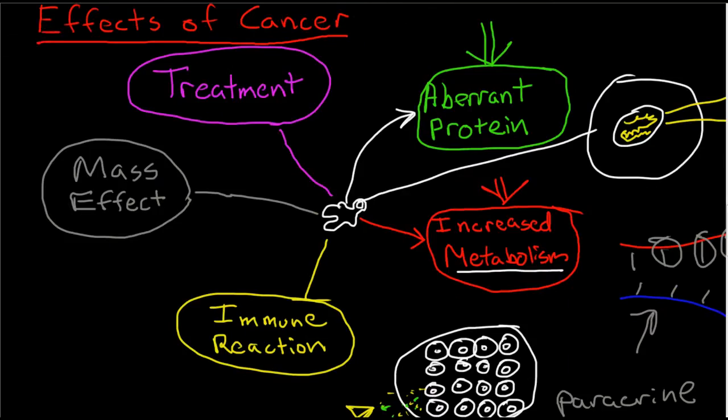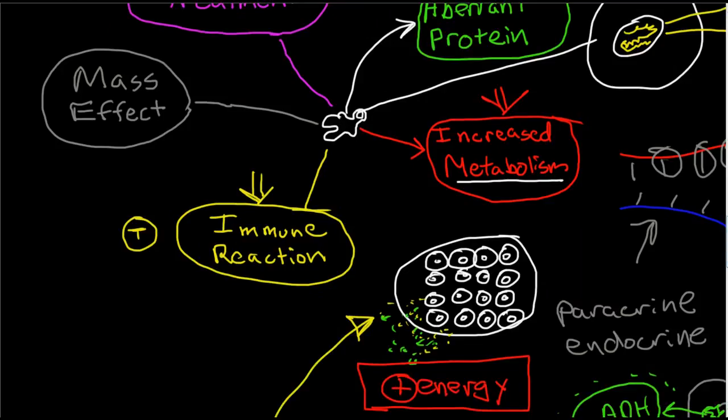Now, the third area I want to talk about is the body's immune reaction. Now, the body detects, the body's immune system detects that there is a tumor. We've got T cells that are designed to detect non-self and they start to produce cytokines and we know in particular cytokines that are really important in recognizing and responding to tumors are TNF-alpha and IL-1, IL-2 and IL-6.